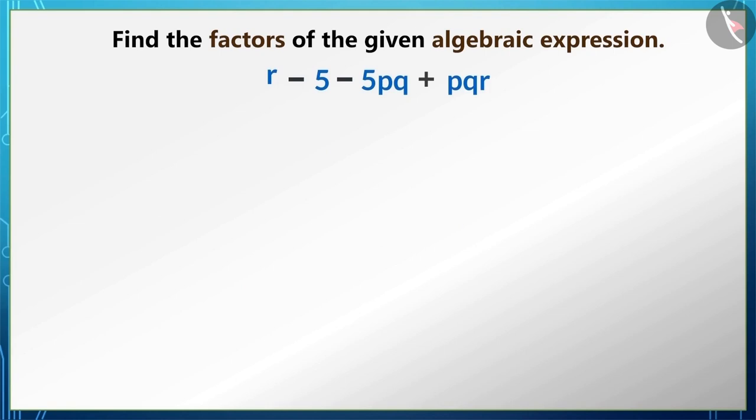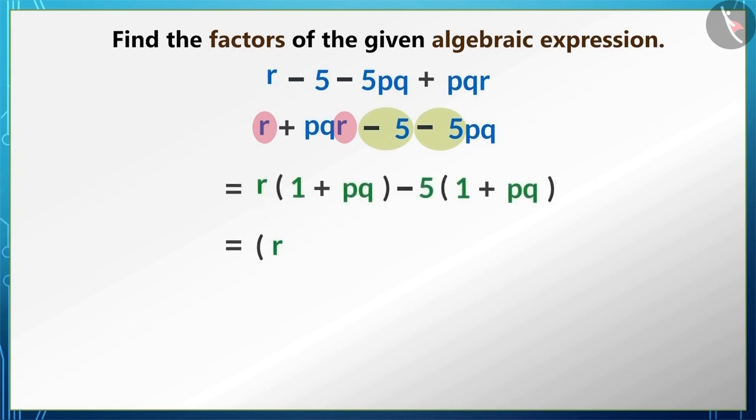We can rearrange this expression in another way. If we write the first and last terms together, then write the second and third terms later, what are the common factors you see here? r is common in the first and second term, and -5 is common in the third and fourth term, so we can write it this way as well.